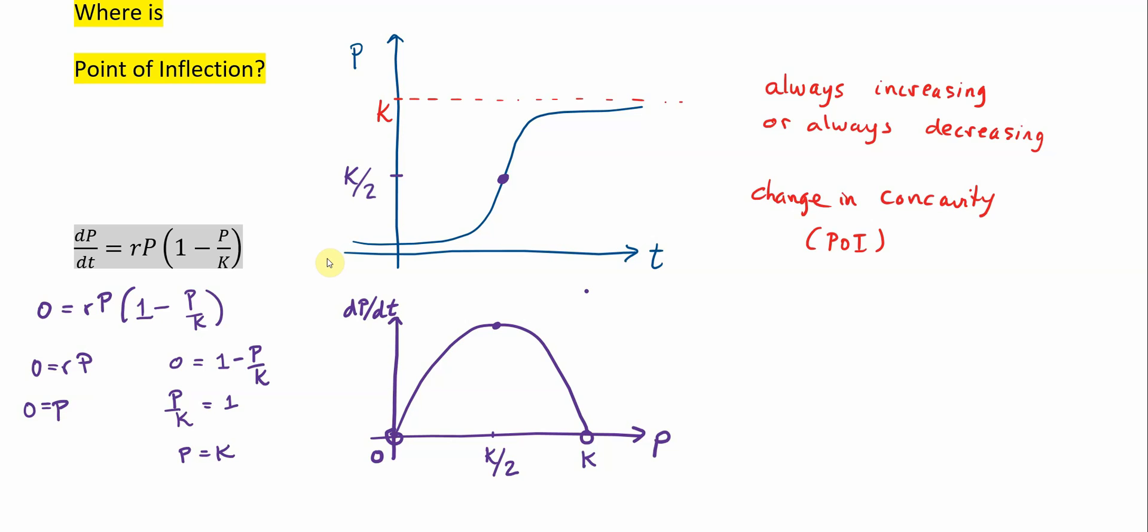So very nice update here to our list of information about logistic functions. They are either always increasing or always decreasing. The always increasing is by far more common. There is a change in concavity, there is a point of inflection that occurs when P is equal to half of the carrying capacity.